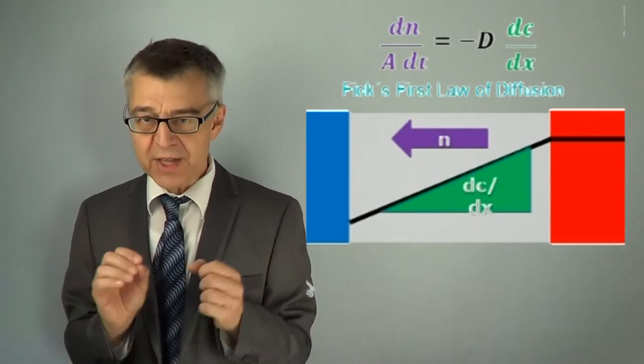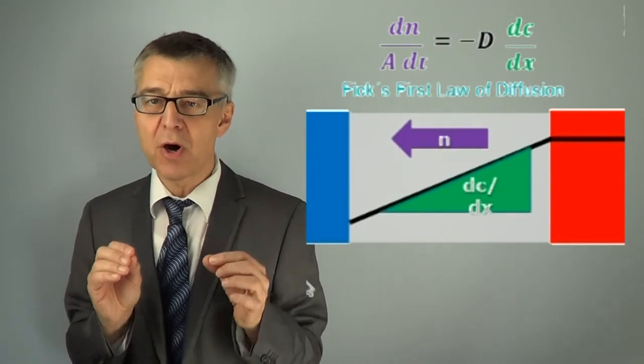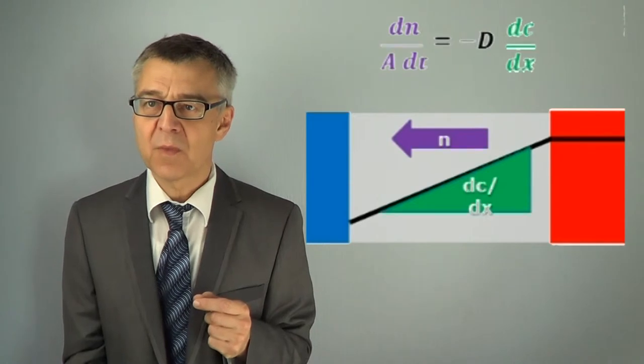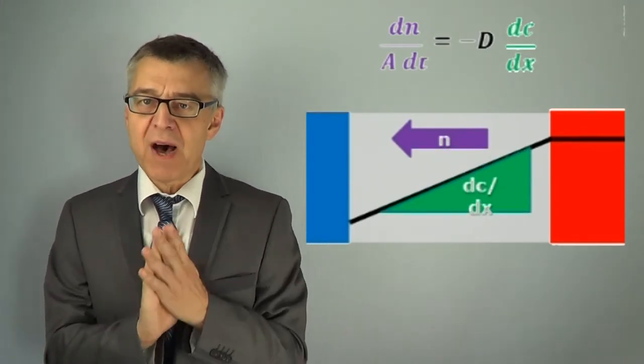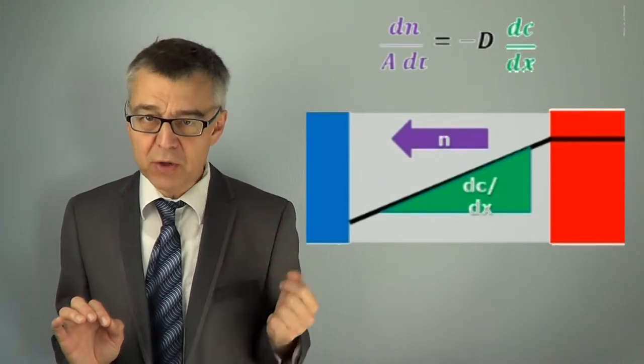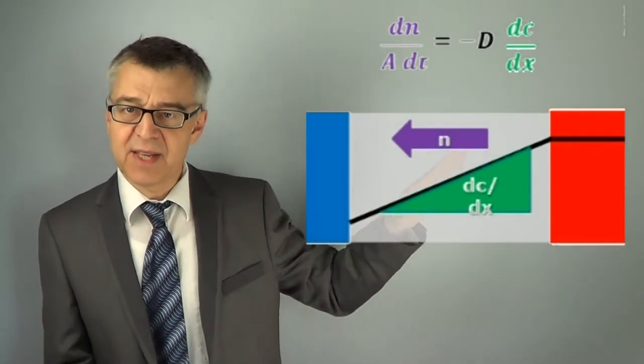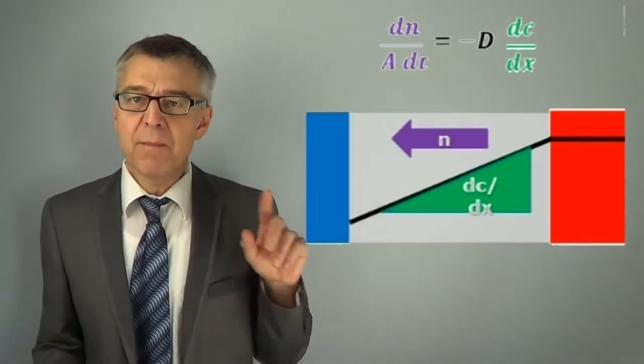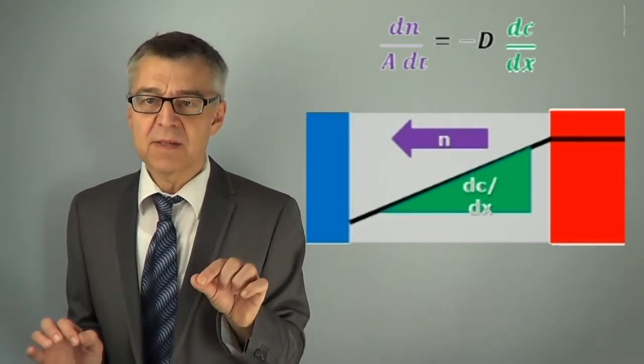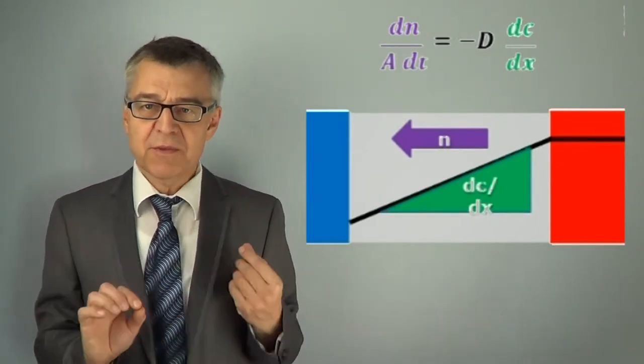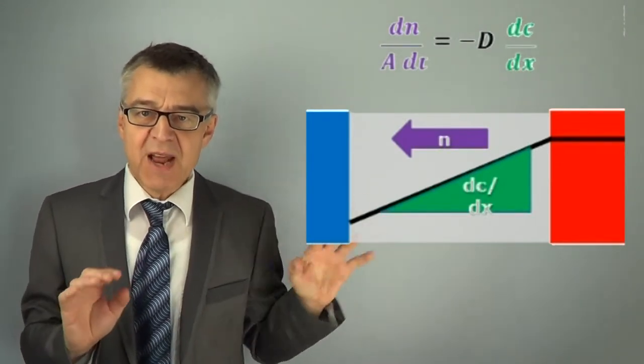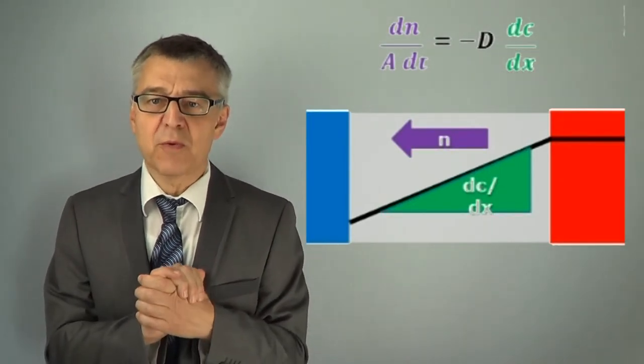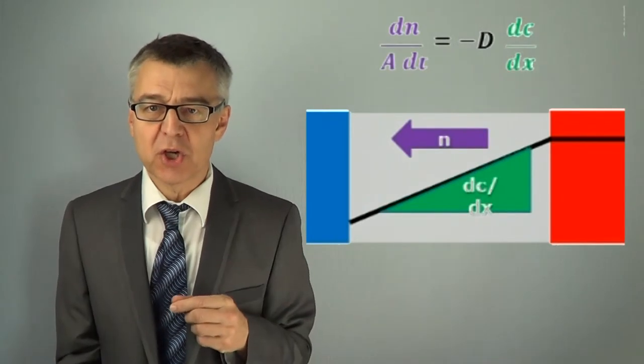In words, the rate of diffusion is proportional to the slope of the concentration profile. In our example, we have outlined stationary diffusion. The slope, the gradient dc over dx, is the same everywhere. That means the amount of substance flowing from left to right proceeds everywhere at the same speed. This also means that the gradient does not change over time.